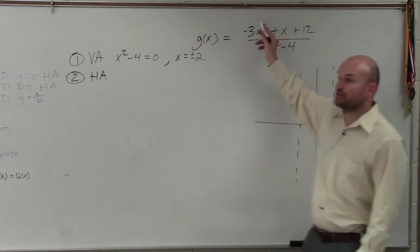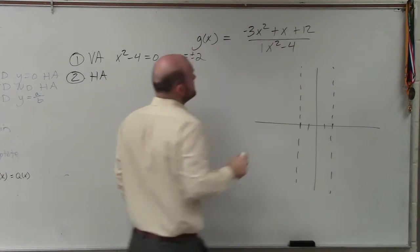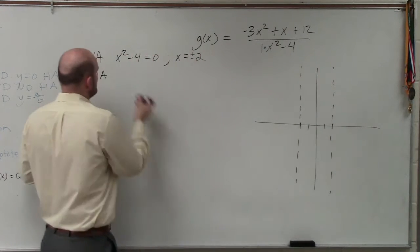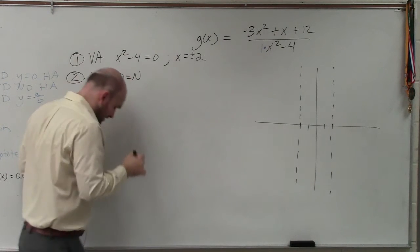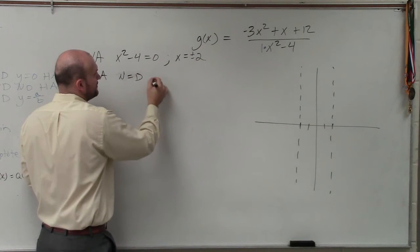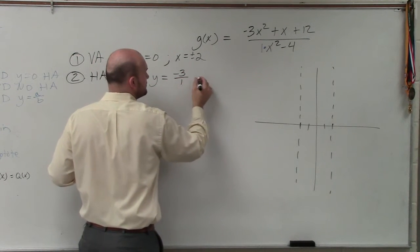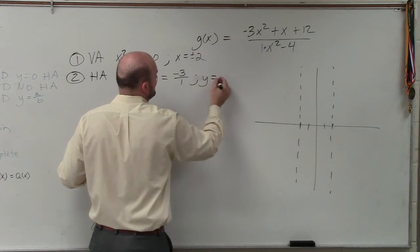So my degrees are exactly the same, right? So the leading coefficient of my numerator is negative 3. The leading coefficient of my denominator is 1. So my horizontal asymptote, I could say d is equal to n. The degree in my numerator is equal to my denominator. Therefore, y equals negative 3 over 1, which is just the same thing as y equals negative 3.